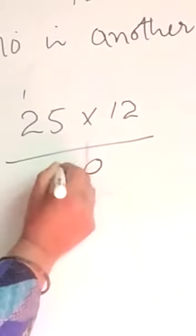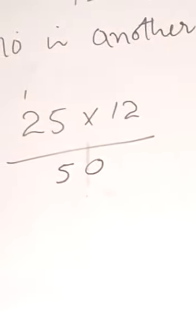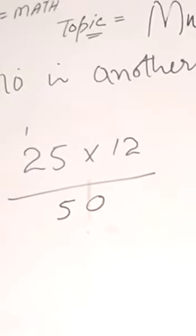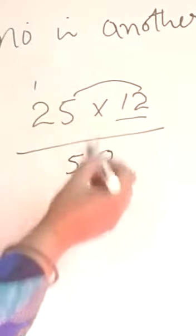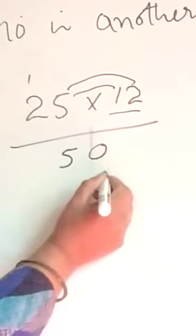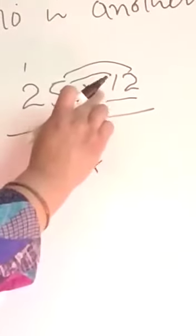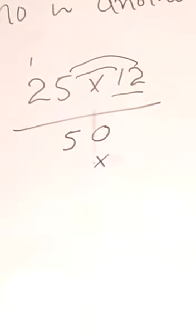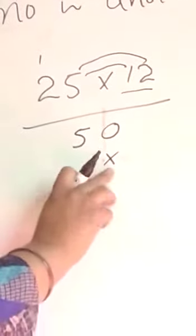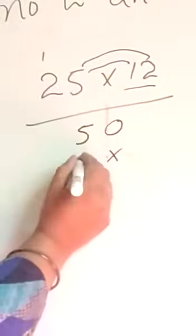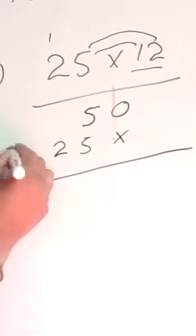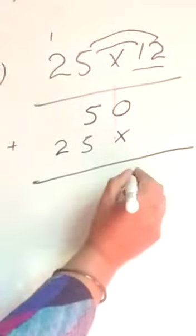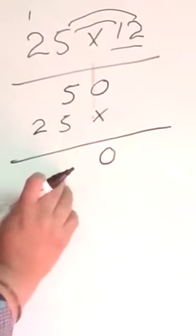Toh kitna ho jayega? Two-fives are four plus one — kitna ho jayega? Five. So, multiply 1×5 is 5 and 1×2 is 2. Now what do we need to add? Zero plus zero, then 5 plus 5 is 10, so here is 0, carry 1. Here is 2, plus 1 gives us the answer.